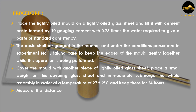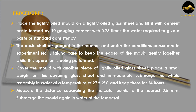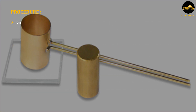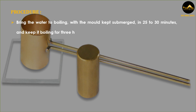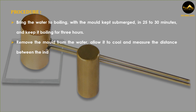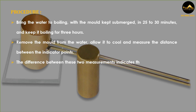Measure the distance separating the indicator points to the nearest 0.5 mm. Submerge the mold again in water at the temperature prescribed above. Bring the water to boiling with the mold kept submerged in 25 to 30 minutes, and keep it boiling for 3 hours. Remove the mold from the water, allow it to cool, and measure the distance between the indicator points. The difference between these two measurements indicates the expansion of the cement.